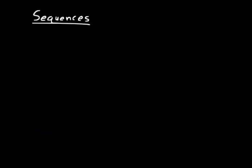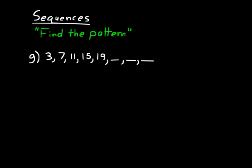Now let's talk about sequences. The key thing to remember is: find the pattern. A sequence is a set of numbers that have a pattern to them. For practice problem G — find the three missing numbers in the sequence 3, 7, 11, 15, 19. The pattern is adding 4 each time: 3 plus 4 is 7, plus 4 is 11, plus 4 is 15, plus 4 is 19. So the next three numbers are 23, 27, 31.